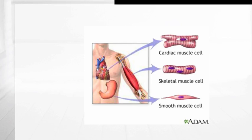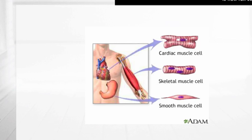This picture shows some of the locations where the skeletal and smooth muscle cells are. The skeletal muscle attaches to the bones for the movement of our body. The smooth muscle cells are mostly surrounding hollow organs like the stomach, bronchi, and esophagus.